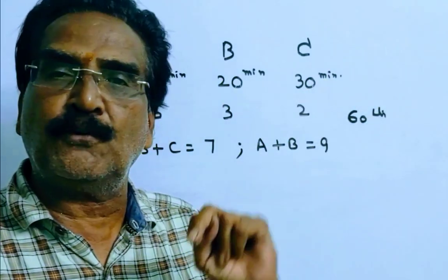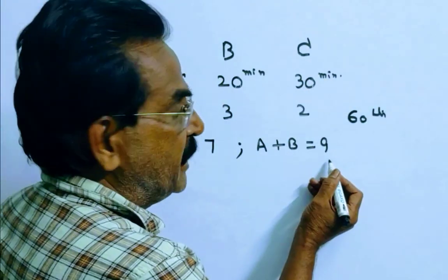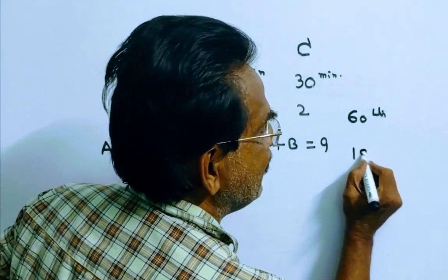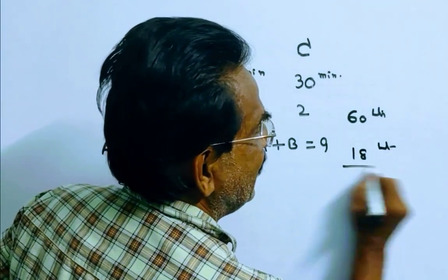They worked for 2 minutes, last 2 minutes. So in the last 2 minutes, pipes A and B can fill 2 times 9, 18 liters.